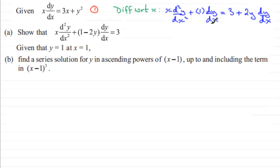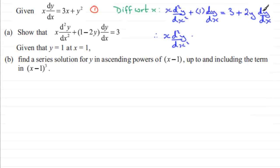It's a simple step now to show the required result. We write x times d²y/dx², then subtract the dy/dx term from both sides and factor out dy/dx as a common factor, giving plus (1 minus 2y) times dy/dx. This equals 3, which is what we had to show.